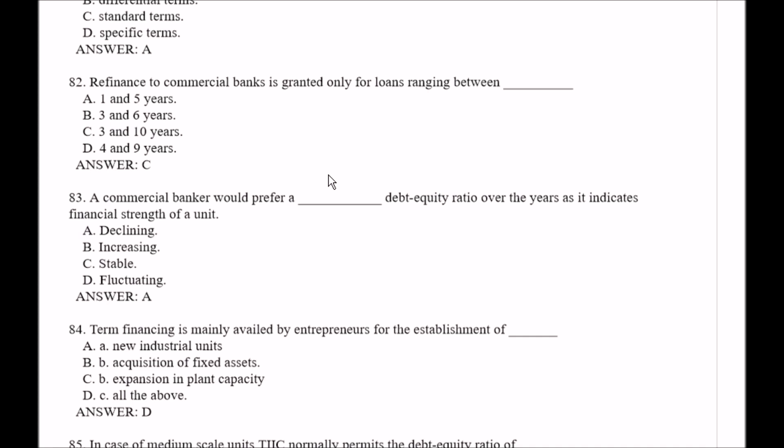Question number 82: Refinance of commercial banks will be granted only for loans ranging between — Option A, 1 and 5 years; Option B, 3 and 6 years; Option C, 3 and 10 years; Option D, 4 and 9 years. The right answer is Option C, 3 and 10 years.